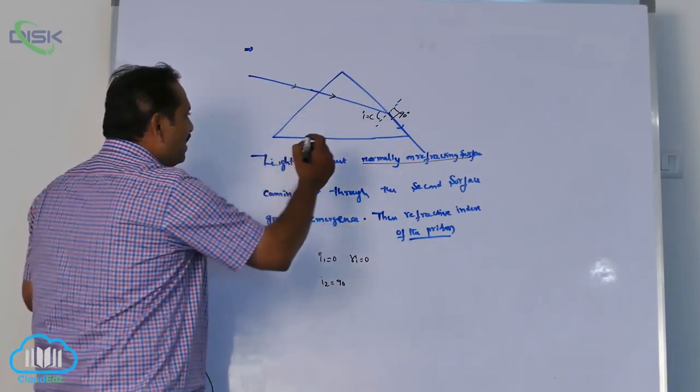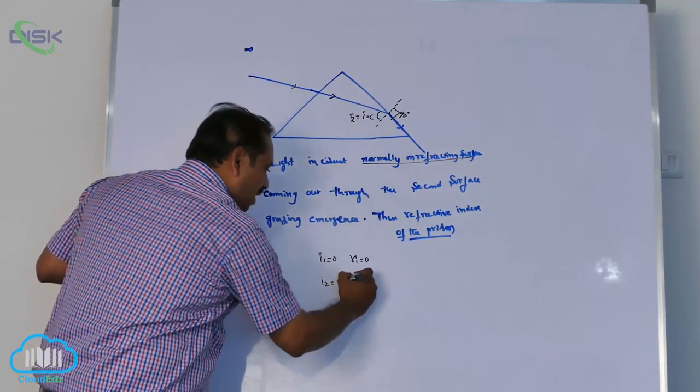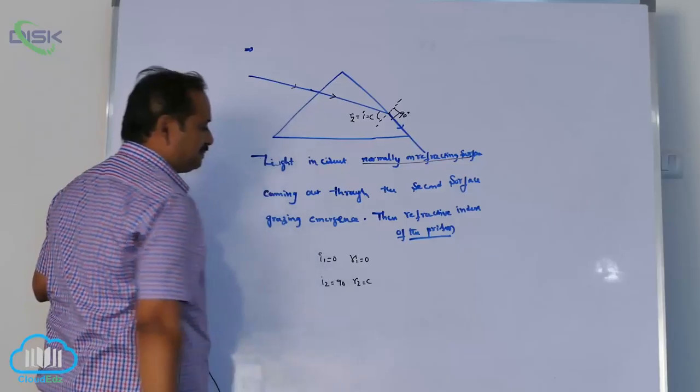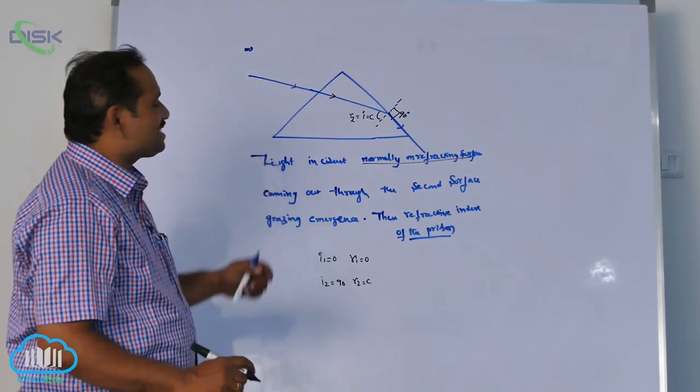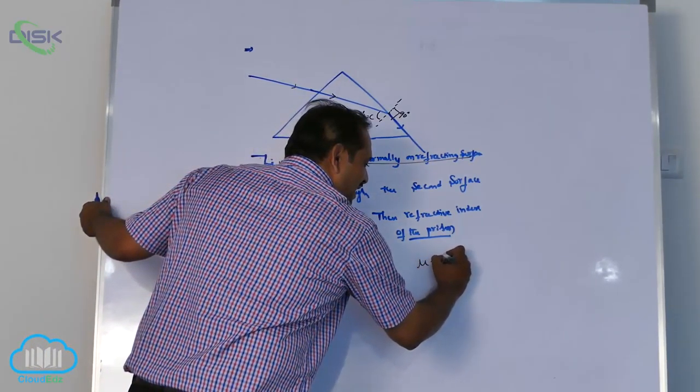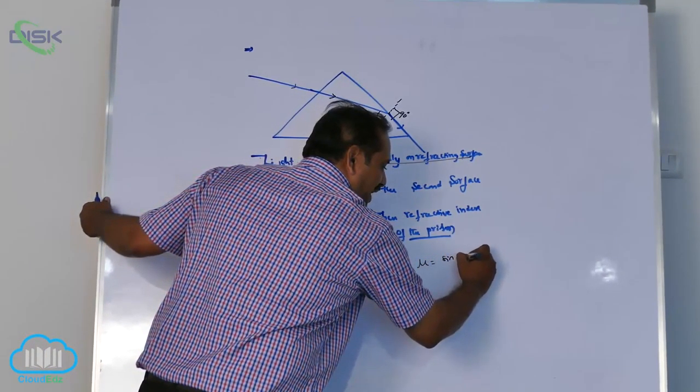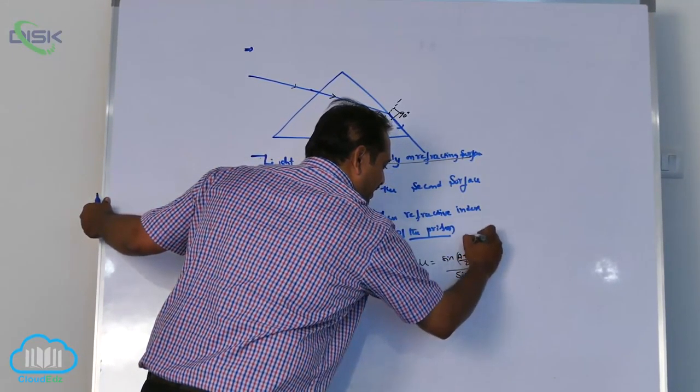Now your i is nothing but, according to my previous diagram, it is r2. r2 equal to what? c. Very important thing. Now in this case, your condition known as μ equal to sin(a+d)/2 by sin(a/2) is failed condition. Very important thing.